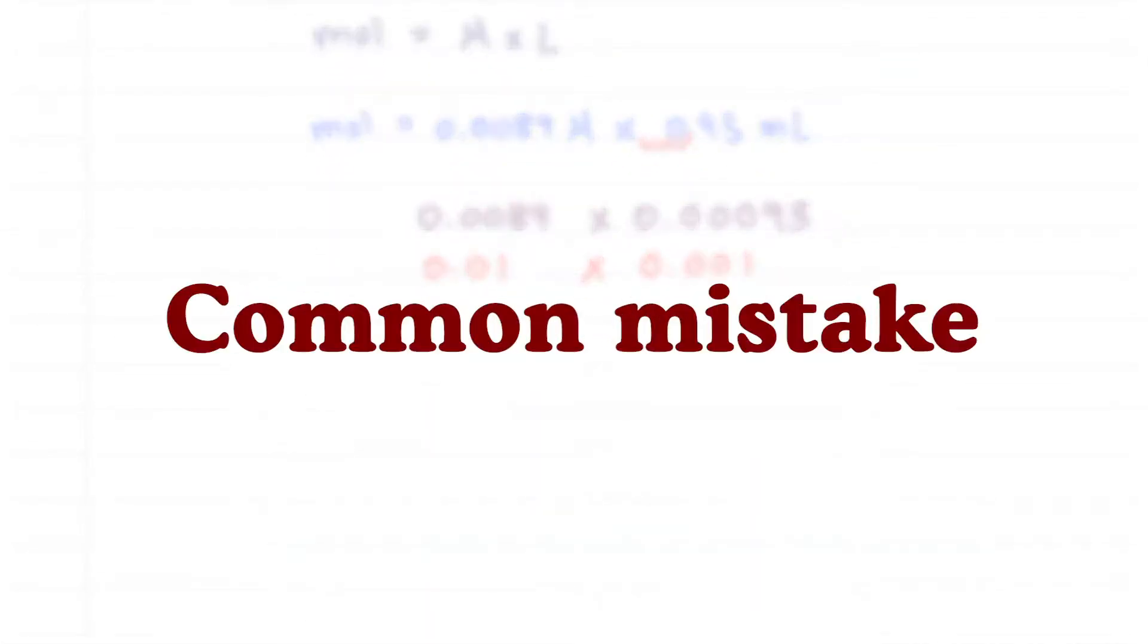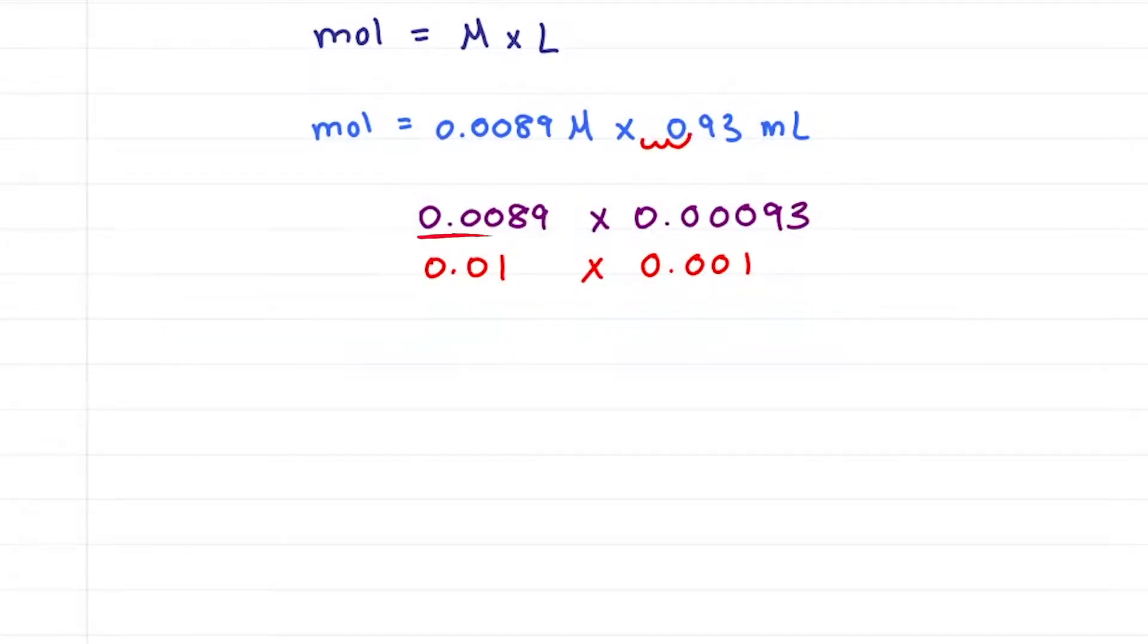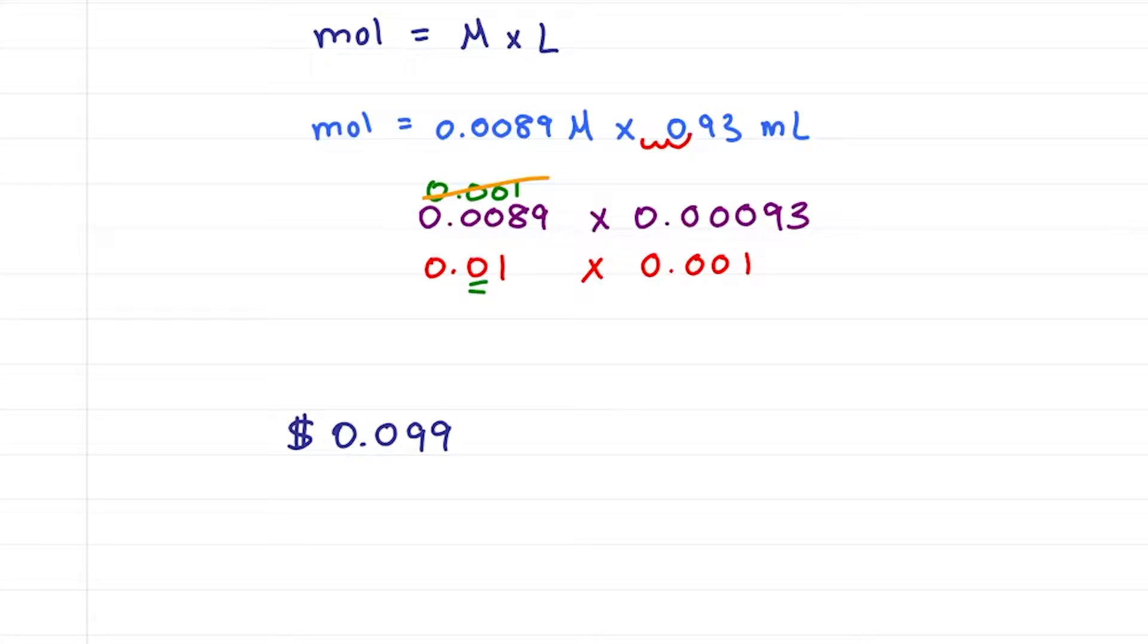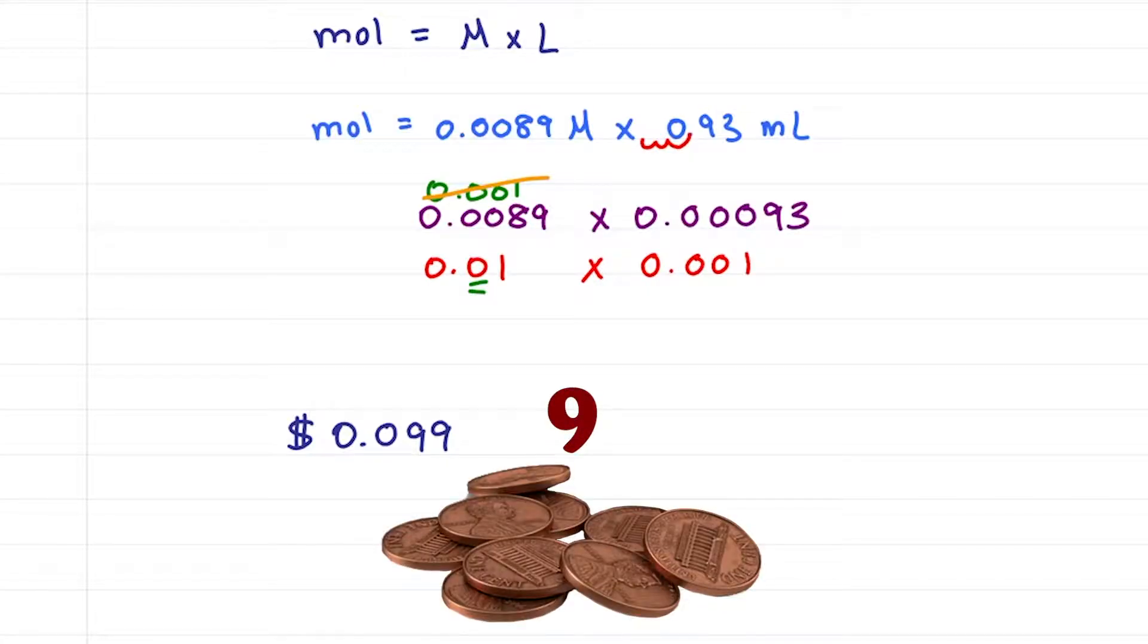A very common mistake here is to round 0.0089 to 0.001 but notice I have one less zero. If I have 0.099 dollars, is that closer to one penny or ten pennies? Well 0.099 is nine pennies and change and if I round that up, that would give me ten pennies. But if I round the nine to a ten, that's only one penny.